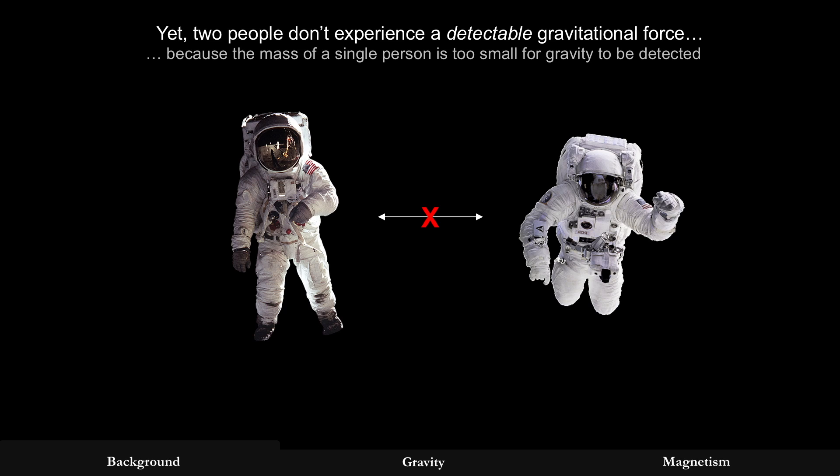But now imagine two people. They don't experience a detectable gravitational force. And that's because the mass of a single person is too small for gravity to be detected. The keyword there is detected. I'll go over that in a little bit.